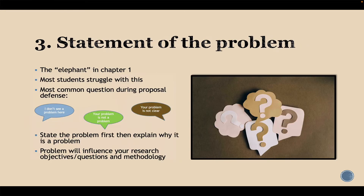Once you have detailed the background of the study, the next section is the statement of the problem — also called the problem statement. This is normally the elephant in chapter 1. Most students really struggle with stating the problem of their study. It is one of the most common questions I've seen asked during PhD thesis proposal defenses. You'll hear comments such as: 'I don't see any problem here,' or 'your problem is not clear — go back and redefine your problem statement.'